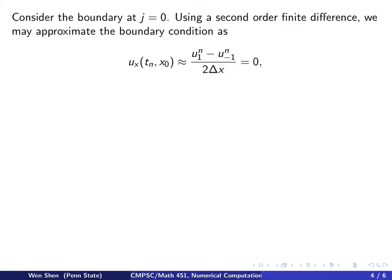Let's consider first the boundary point at j equal to 0, that is, x equal to 0. We would use a second-order finite difference to approximate the boundary condition as follows. So u sub x at x0 is now approximated by a central finite difference, u1 minus u negative 1 over 2 delta x, and the boundary condition is 0.